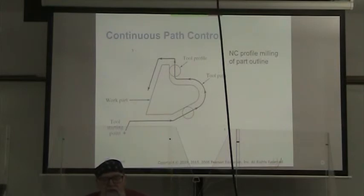For the continuous path control, the tool starts here. It goes along and then it is machining around this contour to make the correct contour part. In this case, this is profile milling.